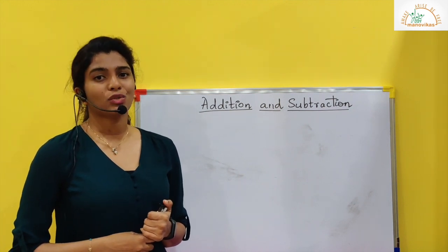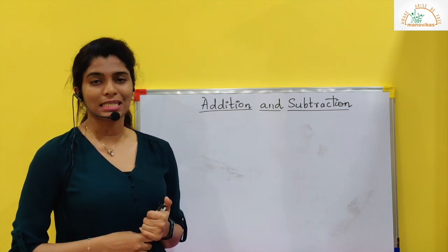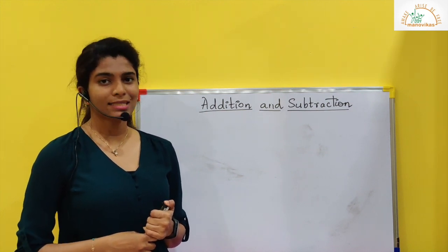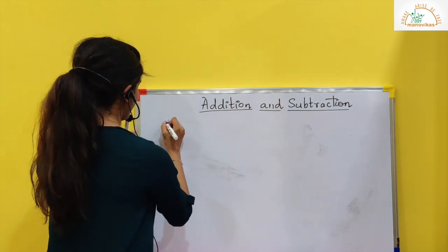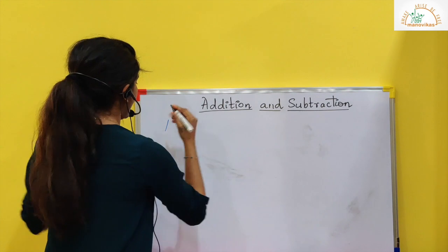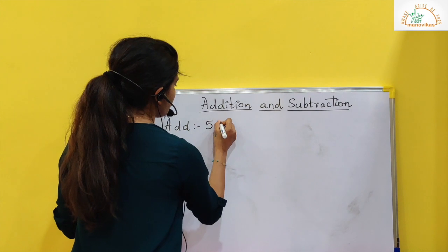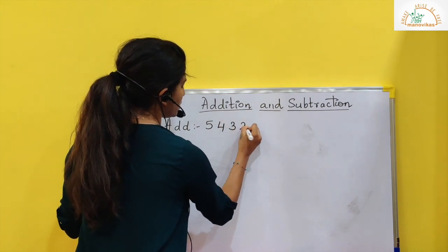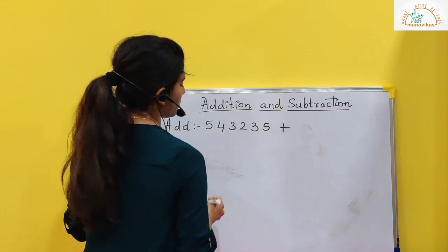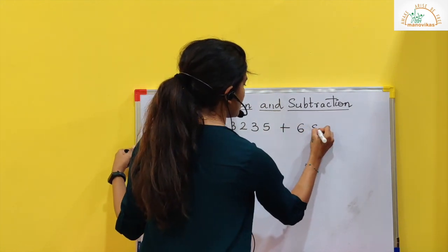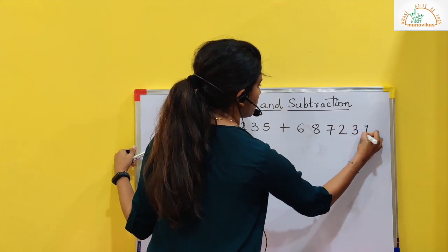Now when we are doing addition and subtraction, here we are doing with five digit and six digit numbers. So let's take one example. Let's begin. Add 5, 4, 3, 2, 3, 5 plus 6, 8, 7, 2, 3, 1.